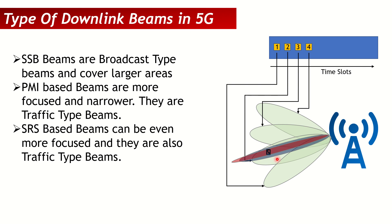In cell-center or good radio conditions, SRS beams are better. Both PMI-based beams and SRS-based beams are types of traffic beams that carry user traffic, while SSB beams are the broadcast beams used for coverage and mobility decisions. That is the summary of the different types of beams and their pros and cons.